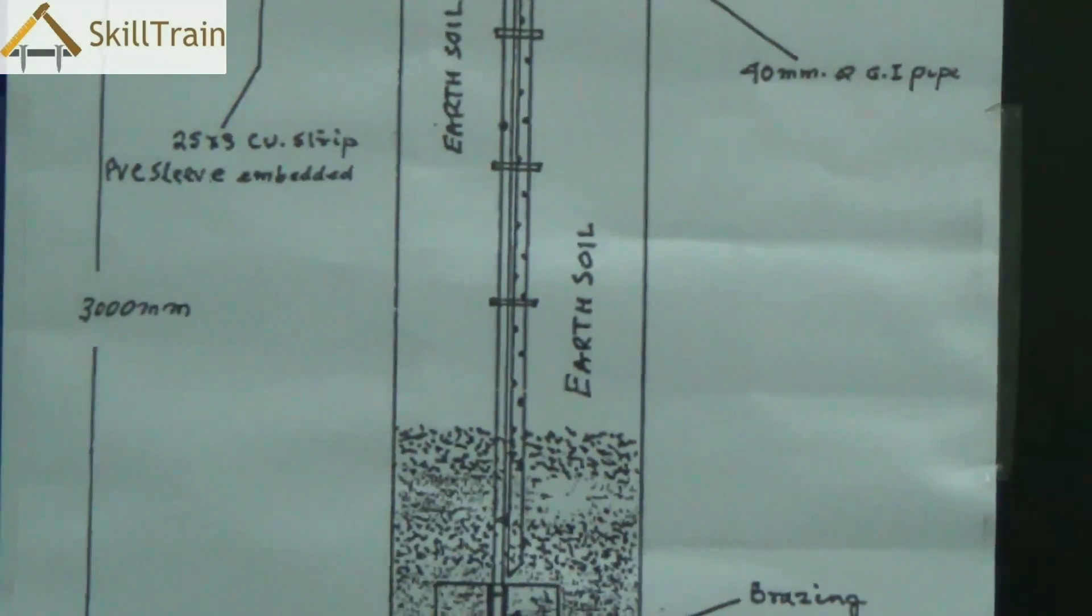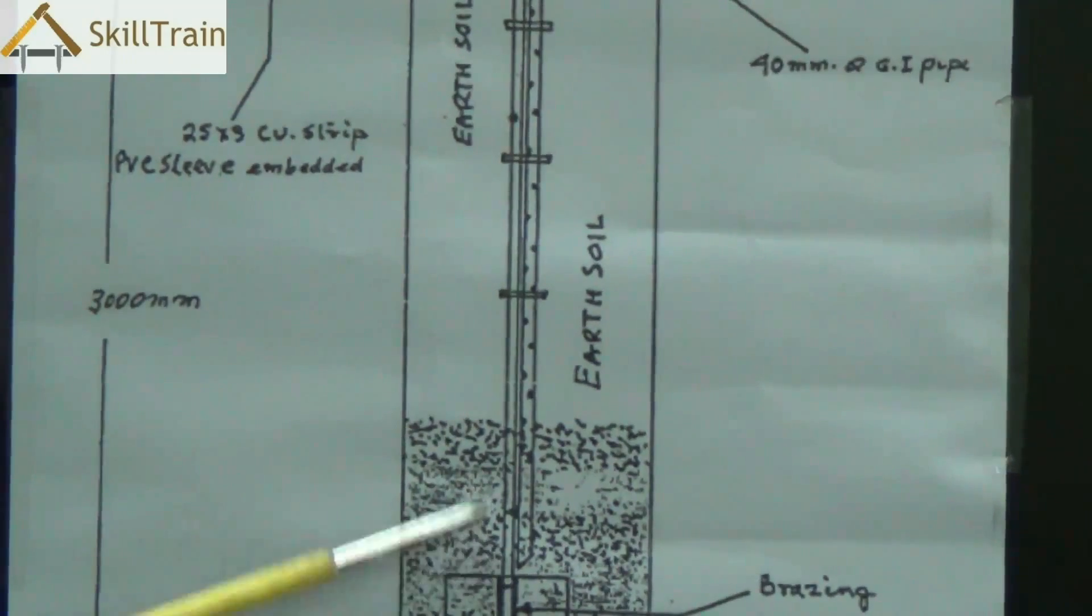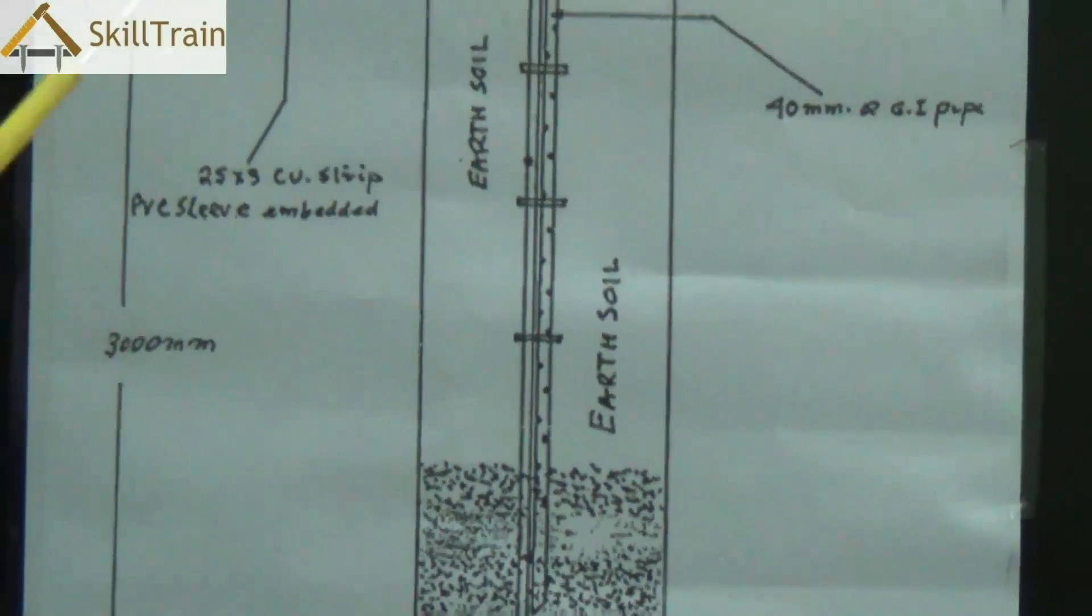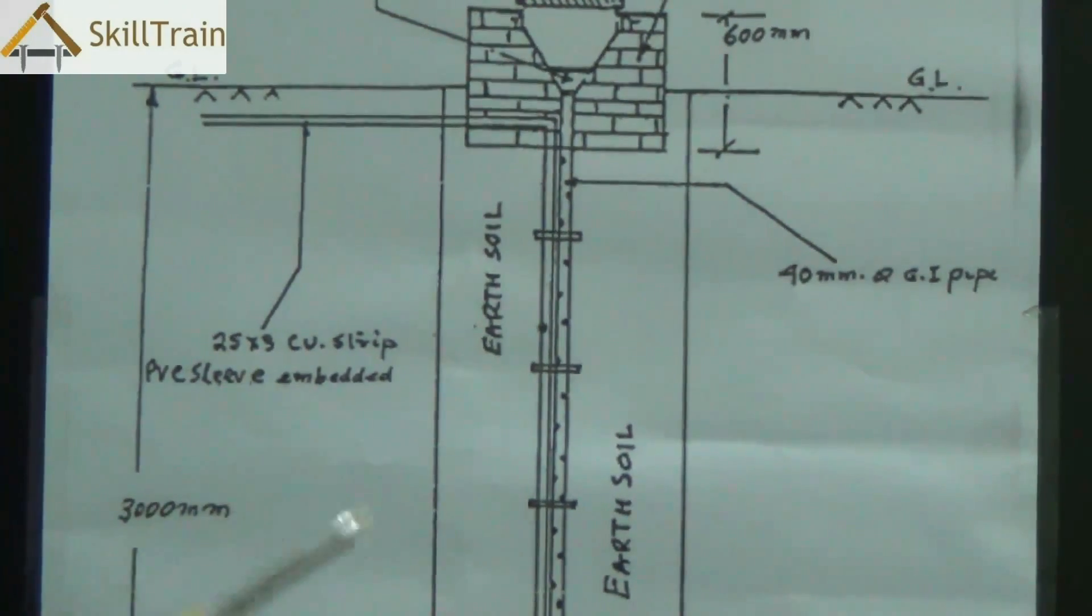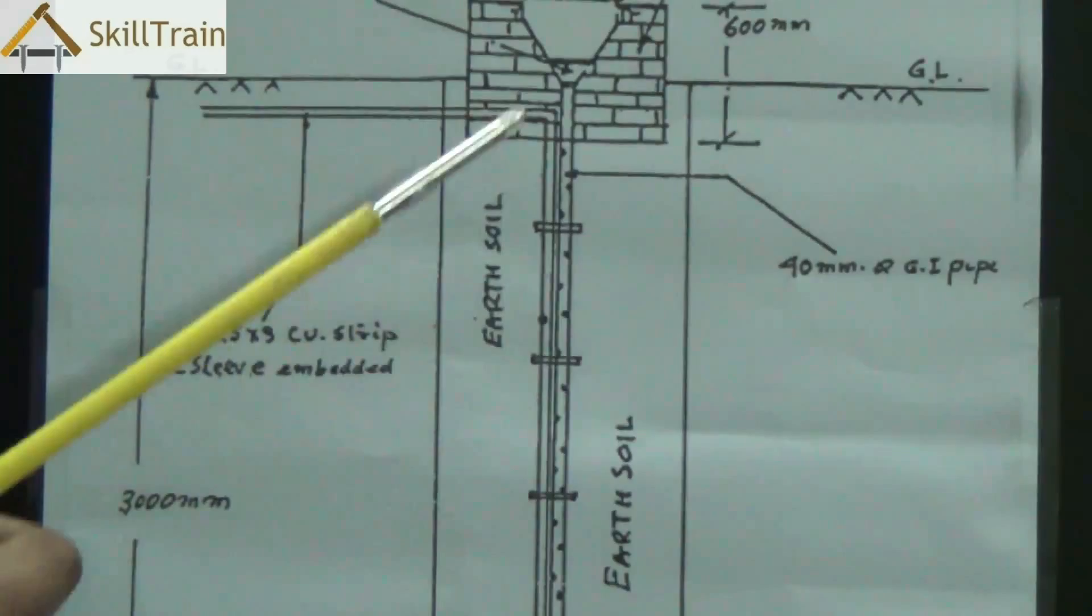So we normally fill up the pit with roughly around three or four layers alternating between coal and salt and the remaining part is filled up with soil from the earth.